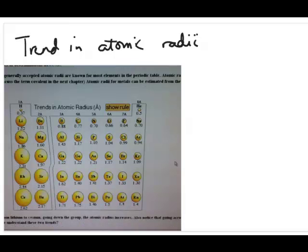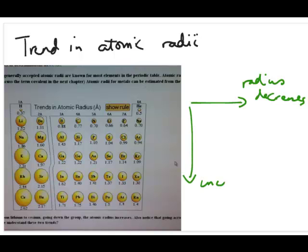Okay, so the next trend I want to discuss is trends in atomic radii. As you can see here, this is what's shown, what we observe experimentally. You can see that as we go from left to right, the size of the atoms gets smaller and smaller, so atomic radii decreases. But then as you go down, the atomic radii increases.